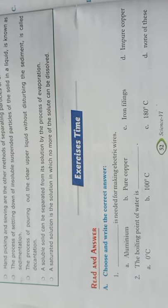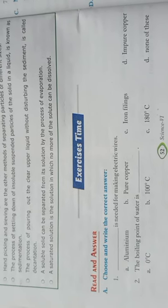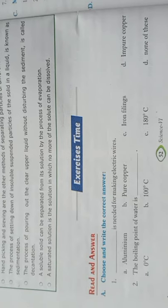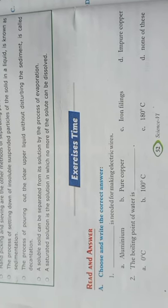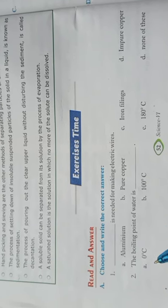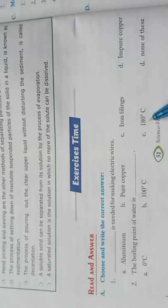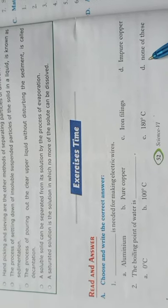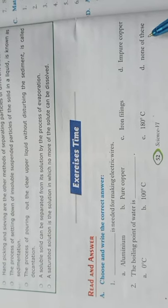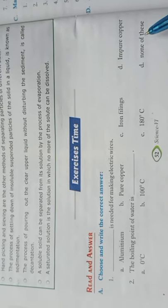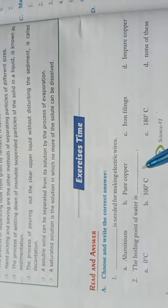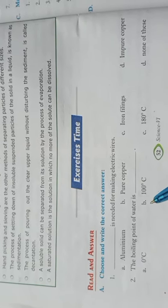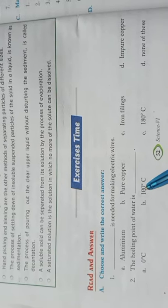Second question: the boiling point of water is — water ki boiling point kitnay hoti hai? Options are 0 degree Celsius, 100 degree Celsius, 180 degree Celsius, or none of these. Answer will be 100 degree Celsius. B option correct hoga.